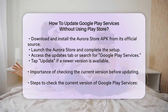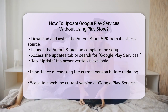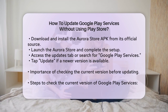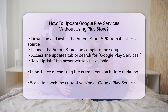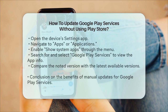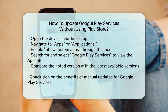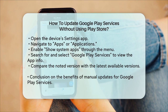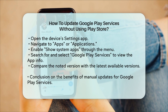Before you start updating, it's a good idea to check which version of Google Play Services you're currently running. Open your device's Settings app and go to the Apps or Applications section. Enable the Show System Apps option, which might be hidden behind a three-dot menu or a filter button. Search for Google Play Services and tap on it to open the App Info menu. Note the version number — you can then compare this with the latest version available on APK Mirror or the Aurora Store.